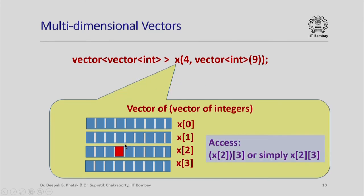To access elements of this two-dimensional vector, we write x(2)(3) — which accesses element at index 2 in vector x, which is itself a vector, and then accesses element at index 3 in that inner vector. This can also be written using square bracket notation as x[2][3]. So by defining x as a vector of vectors we can use it as a two-dimensional array like a two-dimensional matrix.